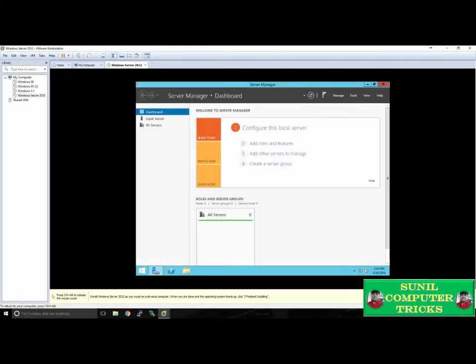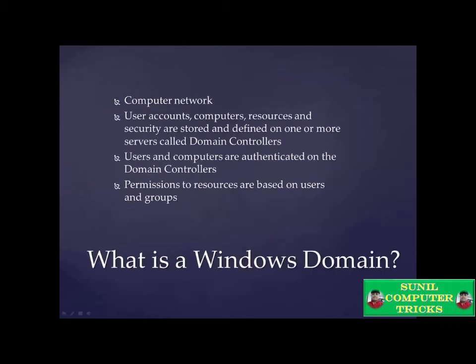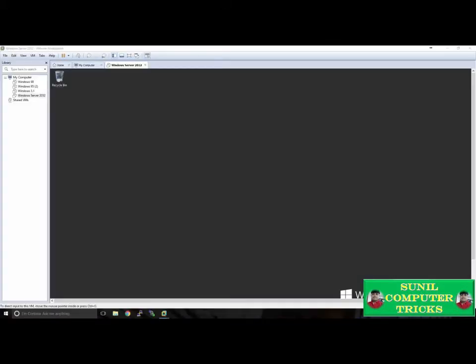The Server Manager window will open, giving me an overview of my server. We've successfully installed Windows Server onto a virtual machine and can now begin to set up our environment. Our next step is to create a Windows domain. A Windows domain is a computer network where user accounts, computers, resources, and the security for all those things are stored and defined on one or more servers called domain controllers. Users and computers are authenticated through the domain controllers, and permissions are based on user accounts and groups.